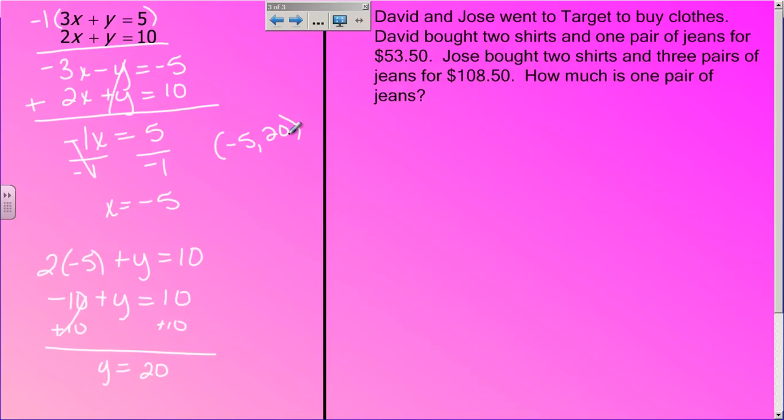So my ordered pair is negative 5 comma 20. So now let's do a word problem, everybody's favorite. So David and Jose, they went to Target to buy some clothes. David bought 2 shirts and 1 pair of jeans for $53.50, and then Jose bought 2 shirts and 3 pairs of jeans for $108.50. How much is 1 pair of jeans?